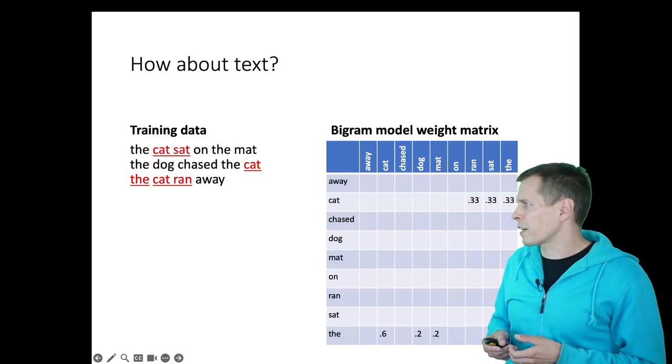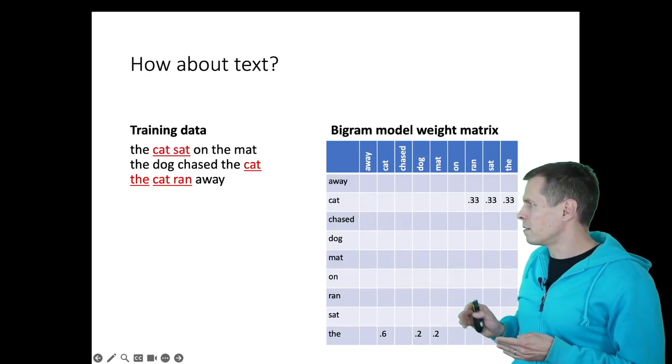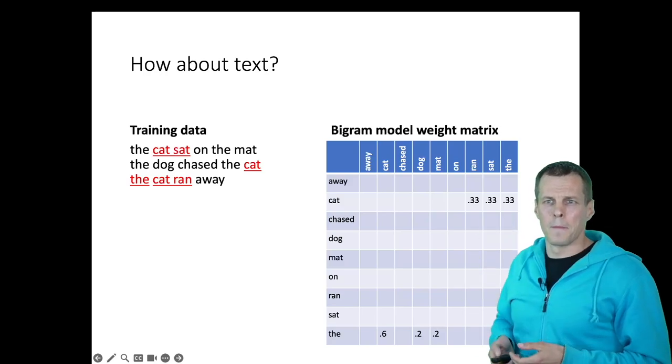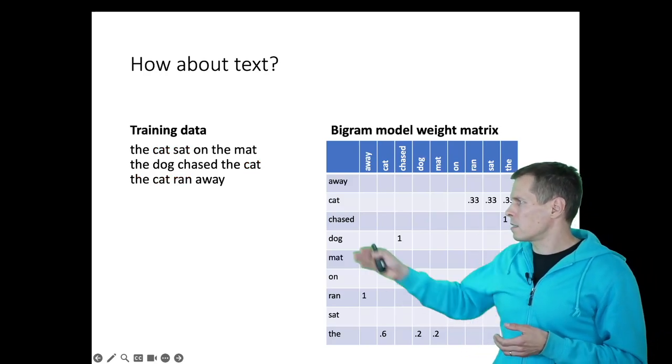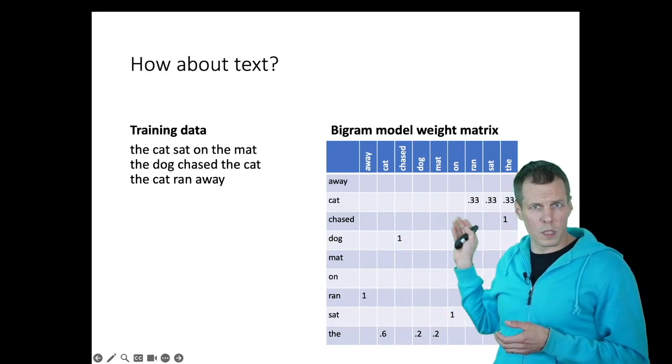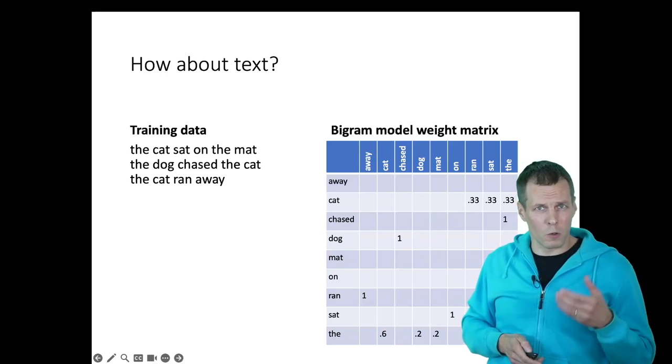Then after 'cat,' we have 'sat,' 'the,' and 'ran.' So all of these have 33% probability. And so on. We can calculate the probabilities. This is the word here on rows, and then columns is the next word.